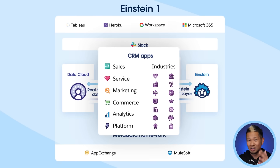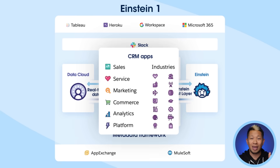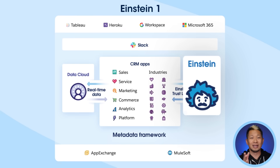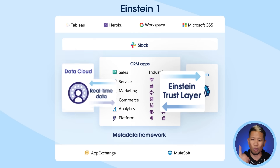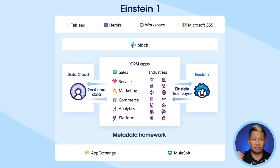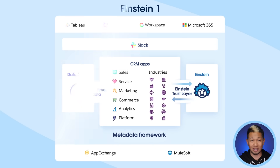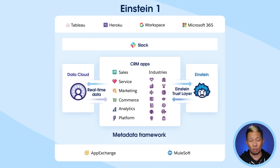We've combined CRM, AI, data, and trust into one platform. And when you put that all together, you get Einstein One, which helps you improve your customer relationships, your productivity, and your bottom line.